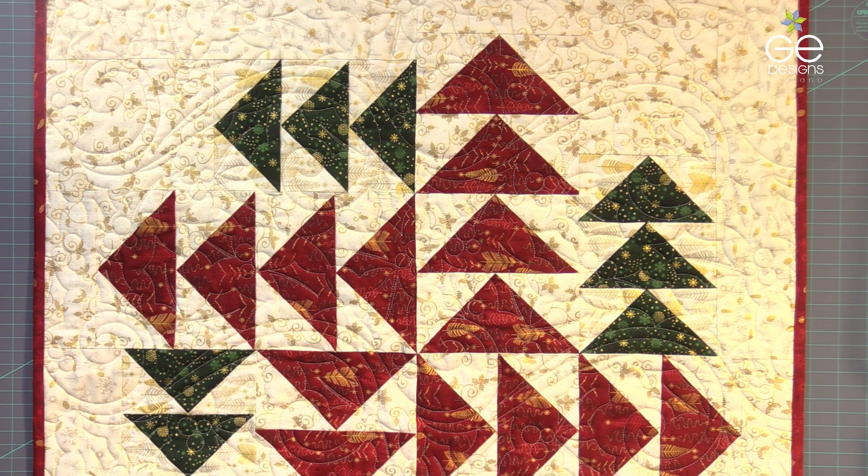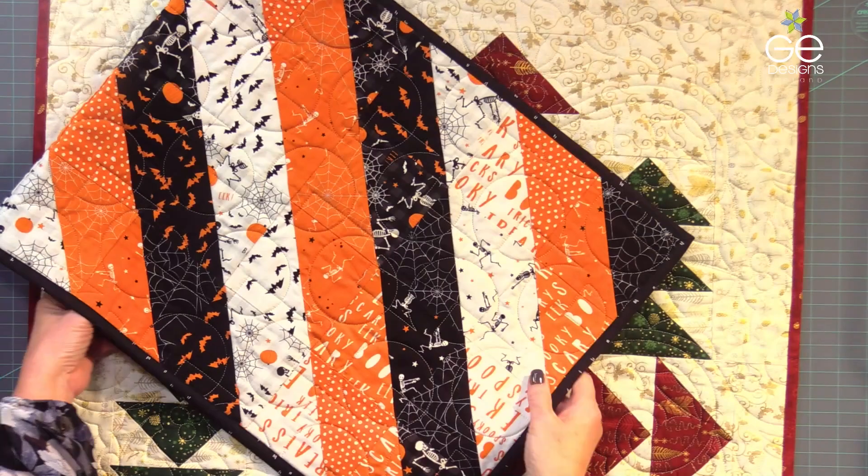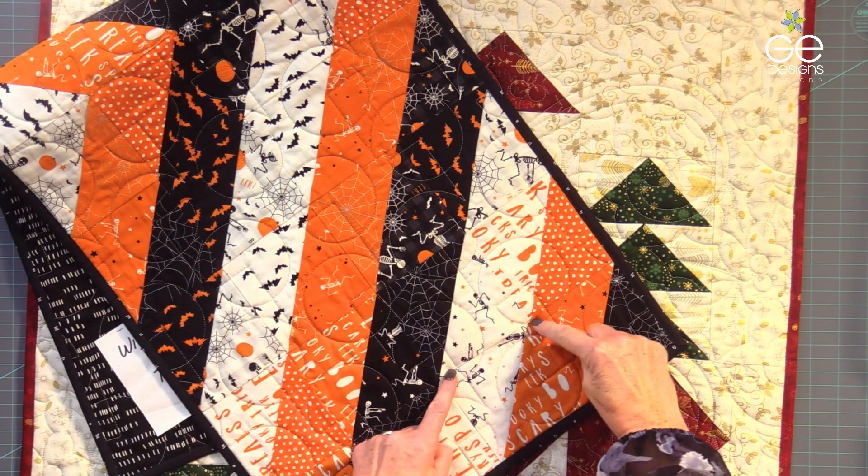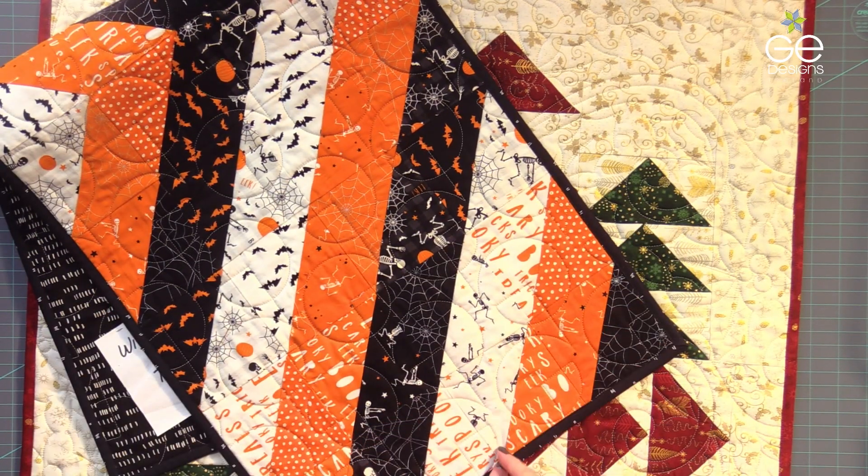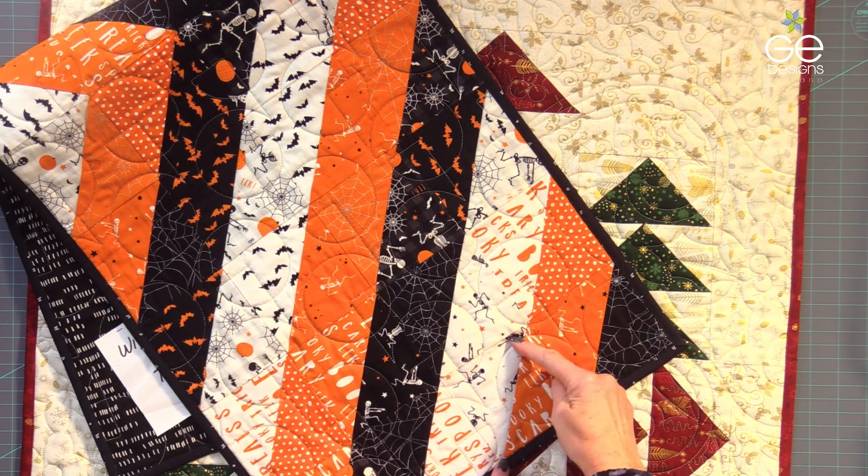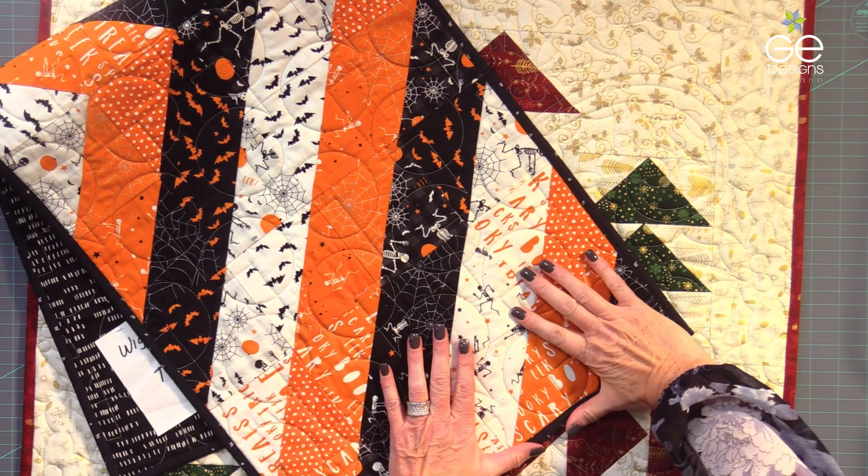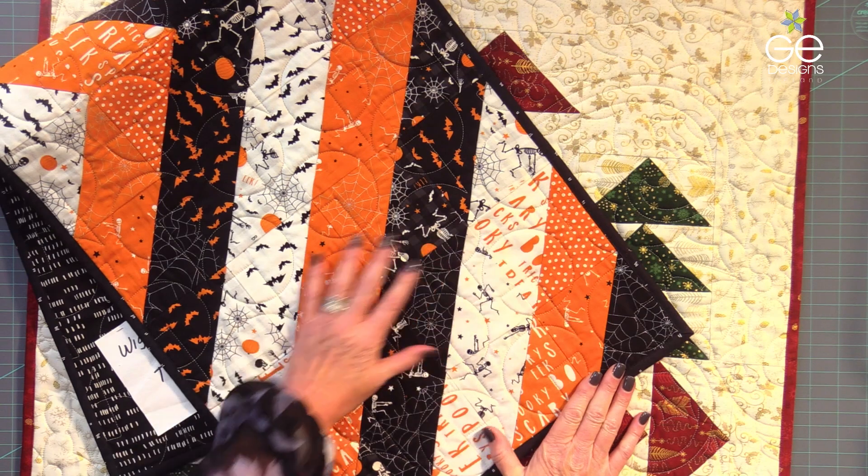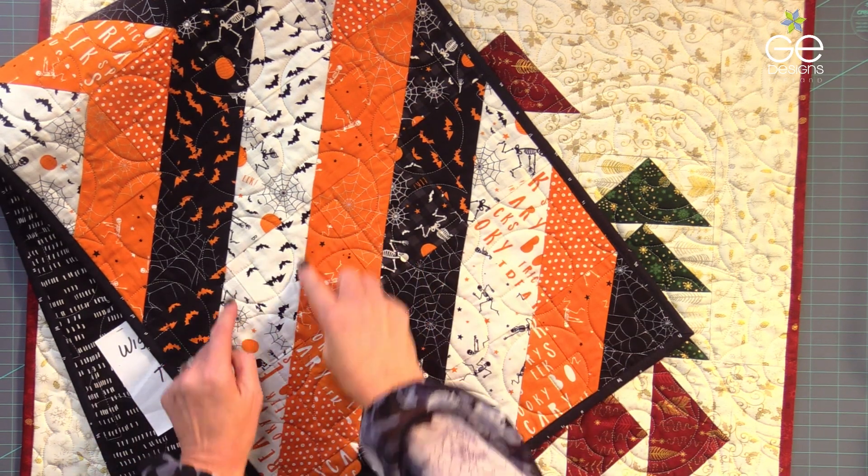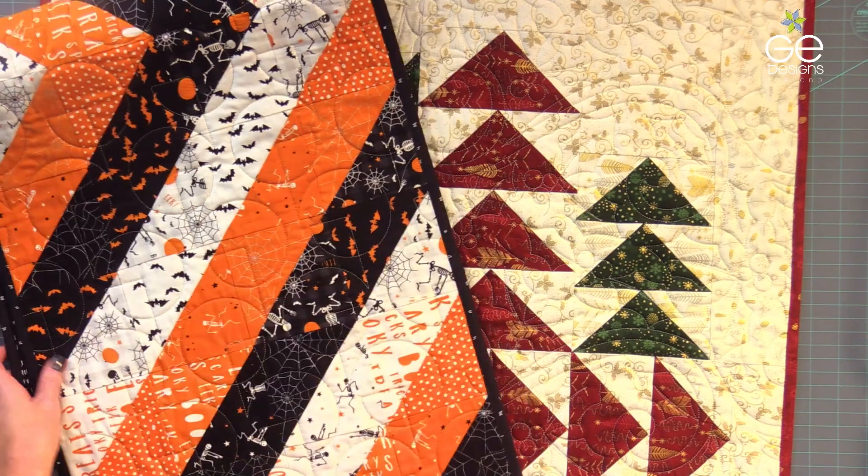You will hear about a half square triangle. What is a half square triangle? A half square triangle is a square that has two right triangles in it. It's hard to see because this one is already sewn in, but this runner is all about half square triangles.